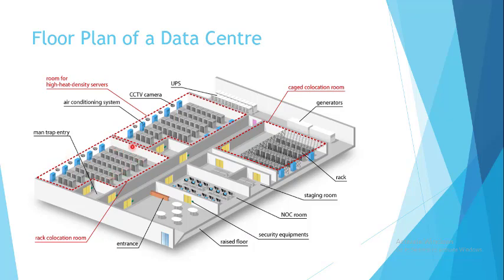You can see here there are server rooms — three server rooms are shown. These are the racks in which your servers are placed. This is the staging area, this is the NOC — network operation center. This is your UPS room, and this is your generator.